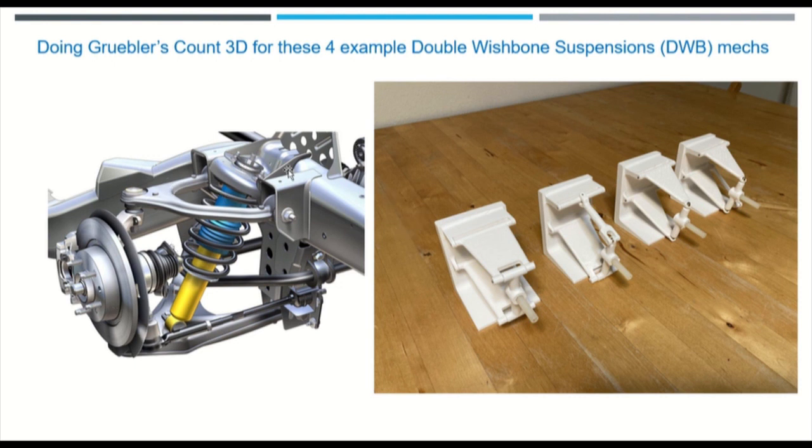There are basically three moving parts: the upper control arm, the wheel and axle assembly, and then also the lower control arm. So I made four 3D printed mechanisms to show the iterations.